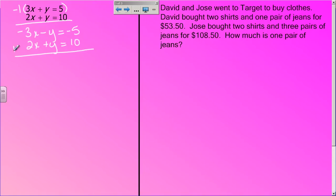So now when I add my equations, my y's eliminate because I have negative y plus y. They go away. So let's do our x's. Negative 3 plus 2 is negative 1x, and negative 5 plus 10 is 5, but I've got to get rid of that negative 1, so x equals negative 5.